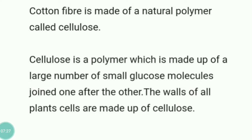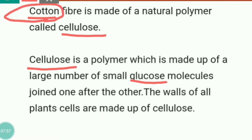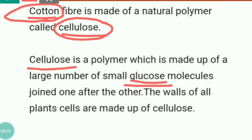An important question which is often asked: cotton fiber is made up of a natural polymer called cellulose. Cotton is made up of cellulose, and cellulose is made up of glucose. So remember: cellulose is a polymer which is made up of a large number of glucose units joined one after the other. Cotton is made up of cellulose, and cellulose is made up of glucose.